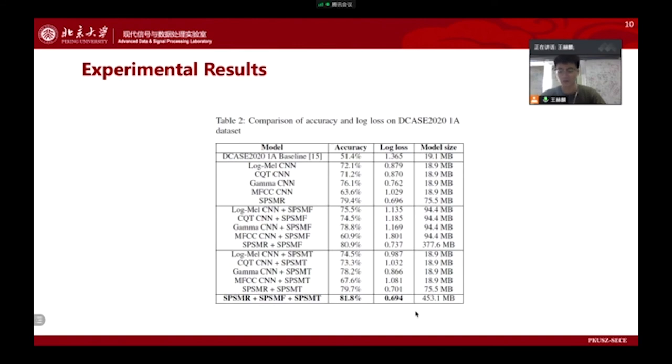As for single representation methods, Gammatone CNN versus SPSMR outperforms all the single representation methods, which evaluates the effectiveness of using multiple representations.